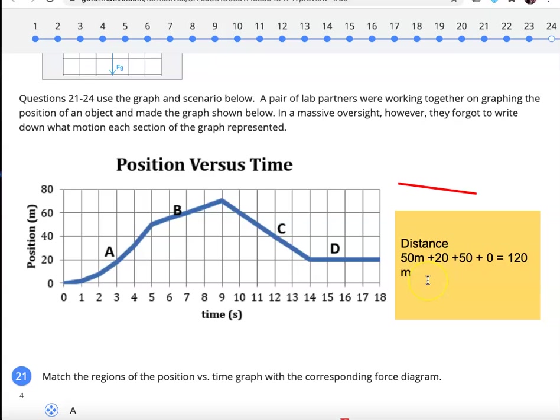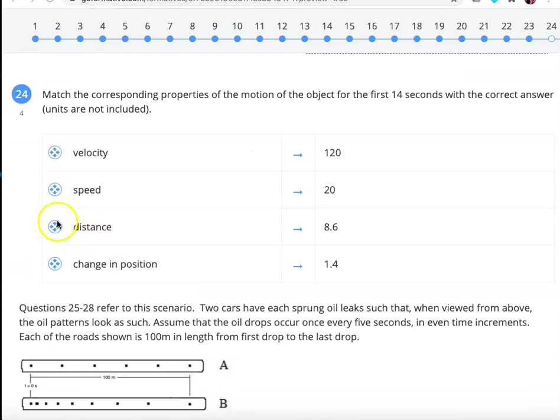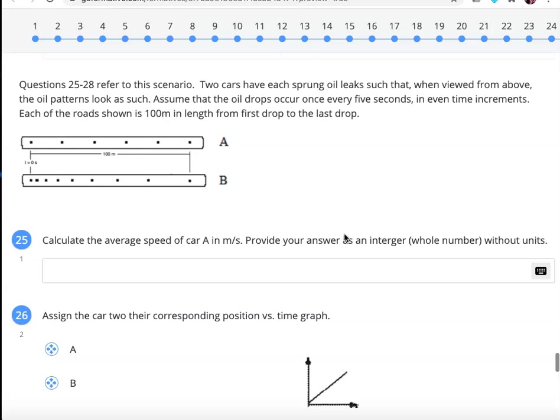But displacement or change in position is different. Change in position doesn't matter what you do in the meantime. You just take your final minus initial position. In this case, my final position was 20. My initial position was 0. And overall, the change in position was 20 meters positive forward. So, let's add that into our chart. I should have my distance being 120. Change in position was only 20. I know that velocity is 20 divided by 14. It's the change in position divided by time, so 20 divided by 14 would be 1.4. And that leaves my speed as 8.6. Or, check it if you want, 120 divided by 8.6.